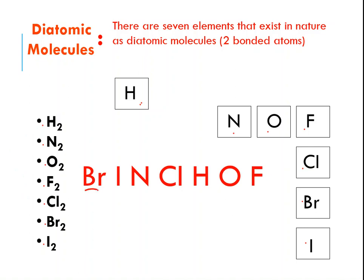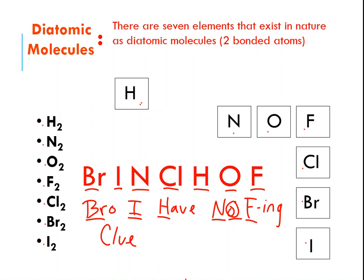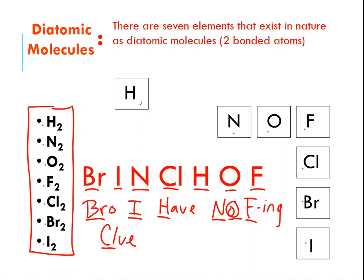There are easy ways to remember the seven diatomics. If you rearrange the symbols — bromine, iodine, nitrogen, chlorine, hydrogen, oxygen, and fluorine — it spells Brinkelhoff, which sounds like some kind of leprechaun name. A student also gave me another mnemonic: 'Bro, I have no freaking clue' — Bromine, Iodine, Hydrogen, Nitrogen, Oxygen, Fluorine, Chlorine. Any way you can remember them works, but you must know that these seven elements, when written in their elemental form and not part of a compound, have to be written as diatomic.